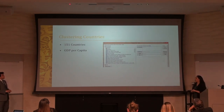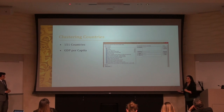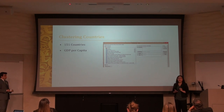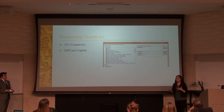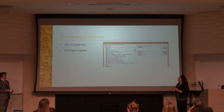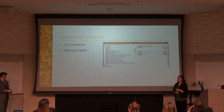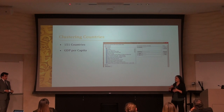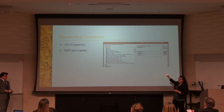For clustering, after removing many countries we centered around 151 countries with more or less complete data. We grouped clusters by GDP per capita, which takes population into consideration and scales the data, meaning we didn't have to standardize it as much.